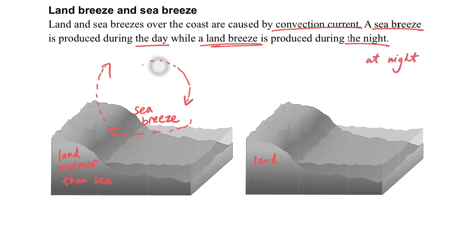And at night, the land is cooler than the sea, so the cool air sinks around the land and the air will go out to the sea to form the land breeze. So this is the general idea about the formation of land breeze and sea breeze. So let's put it down in words.